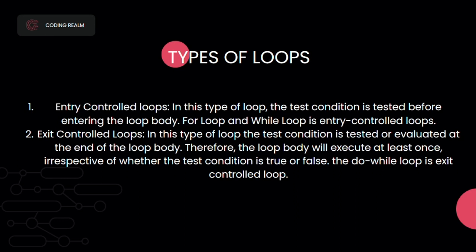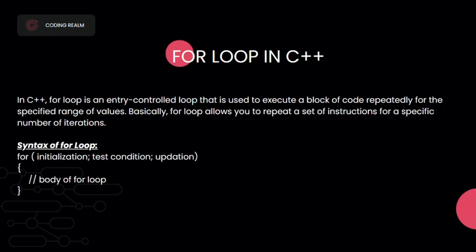Now let's start with the for loop in C++. The for loop is an entry controlled loop that is used to execute a block of code repeatedly for a specified range of values. Basically, the for loop allows you to repeat a set of instructions for a specific number of iterations. This is the syntax of the for loop: we start with 'for', then initialization, test condition, and updating.